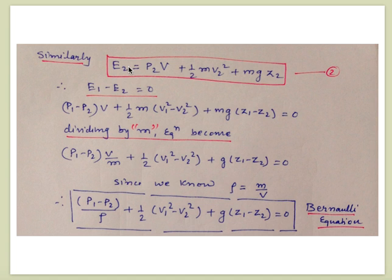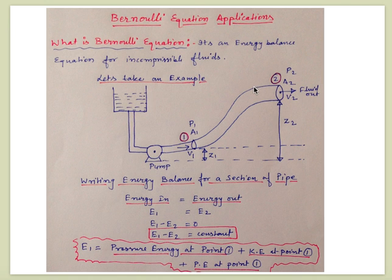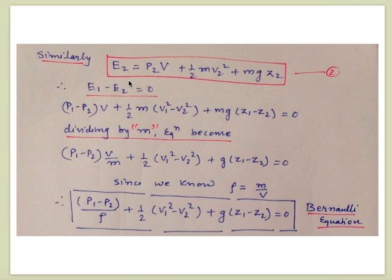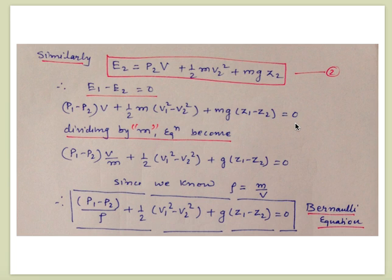Similarly, E2 at point 2 is written as: P2·V plus (1/2)·m·V2² plus m·g·Z2. Setting E1 minus E2 equal to zero gives: (P1 − P2)·V plus (1/2)·m·(V1² − V2²) plus m·g·(Z1 − Z2) = 0.